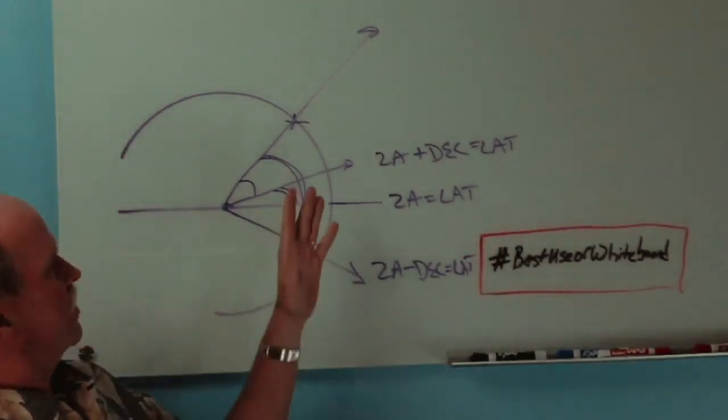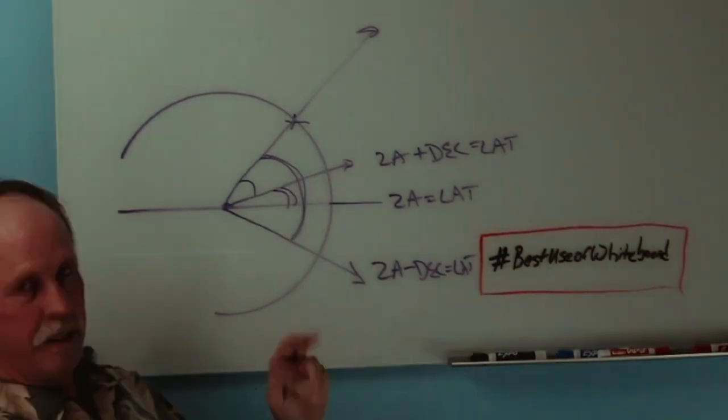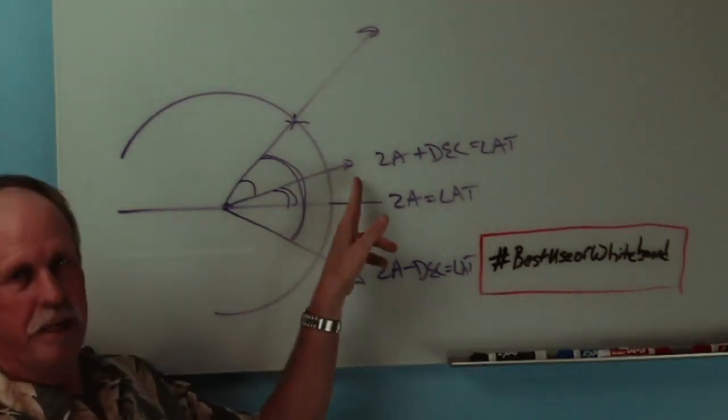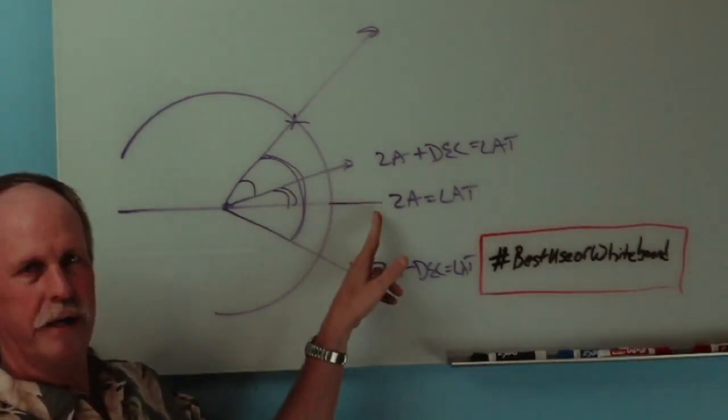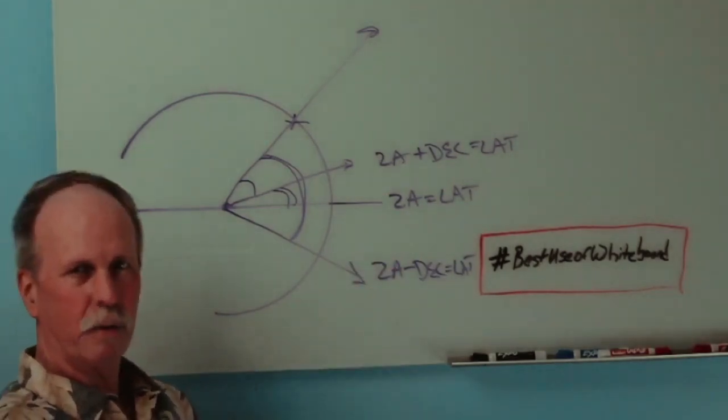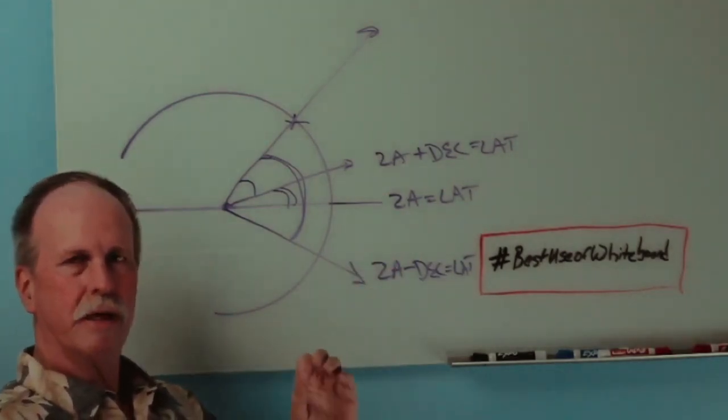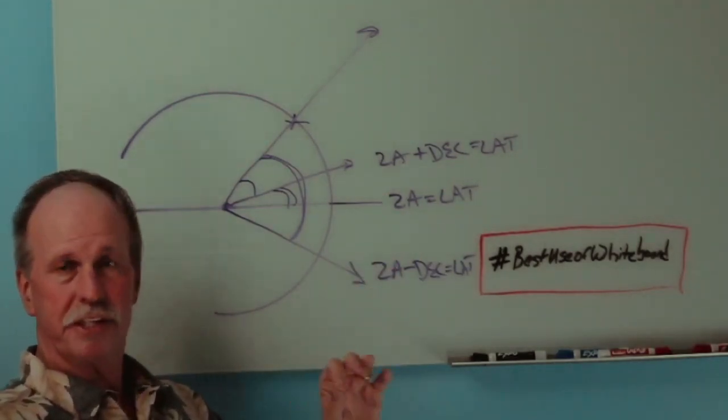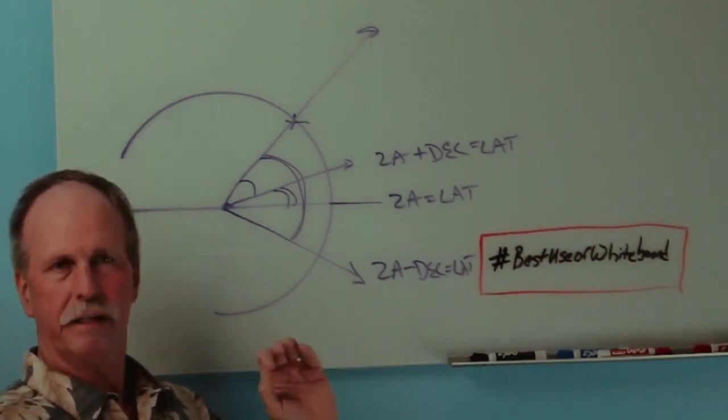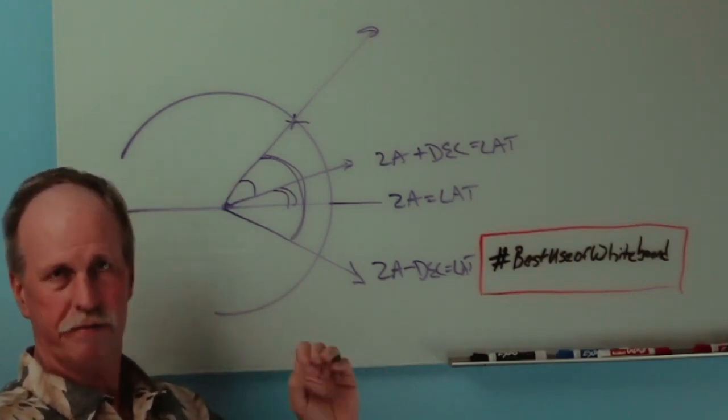So the first thing that you have to say is, what hemisphere am I in? Second, is the Sun between me and the equator? Is it on the equator? Or is it on the other side of the equator? And for that, you look up the declination of the Sun in the Naval Almanac, and it'll tell you what it is every hour of every day of the year.